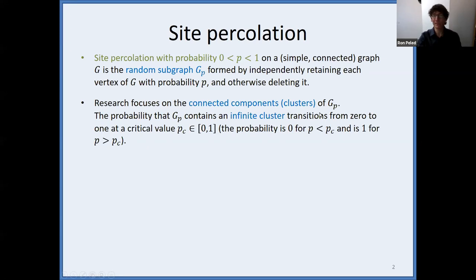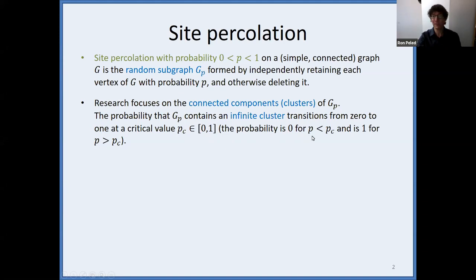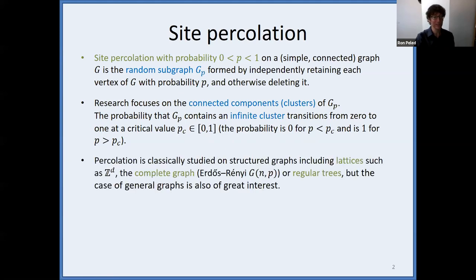I will be interested in the case that the graph G is infinite. In this case, you may ask whether the subgraph G_P is also infinite. It turns out this is a monotone event and there is a threshold for this — a certain value P_C. If your percolation probability P is smaller than P_C, then there is a zero chance to see an infinite cluster, an infinite connected component in G_P. And if it is larger than P_C, the chance is one.